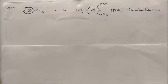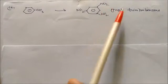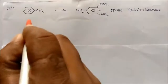Hello friends, in this section we will see some conversions of benzene-substituted compounds into their products. This is toluene, and toluene is converted into trinitrobenzene, TNB. Let us see the process.